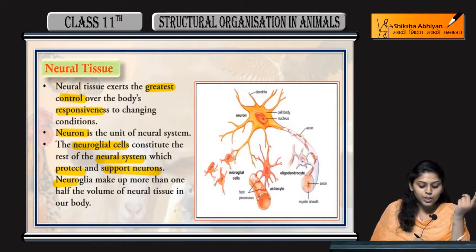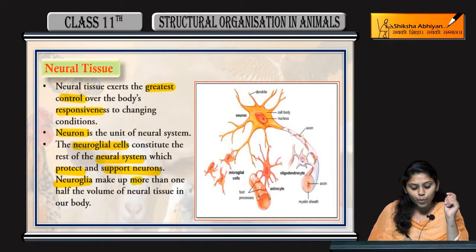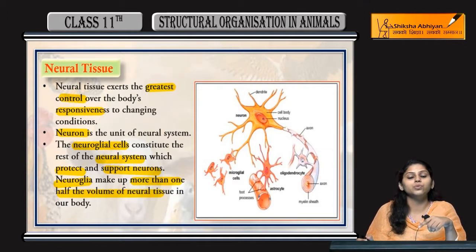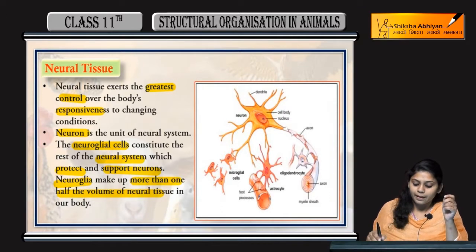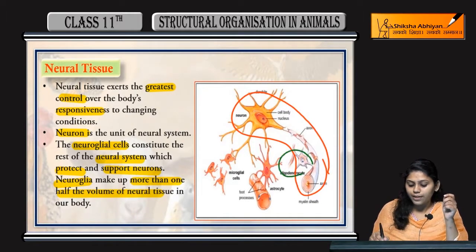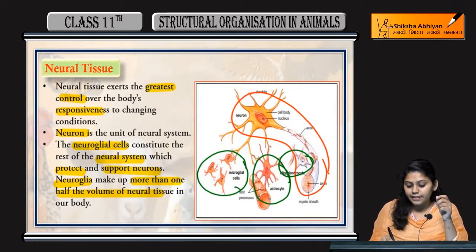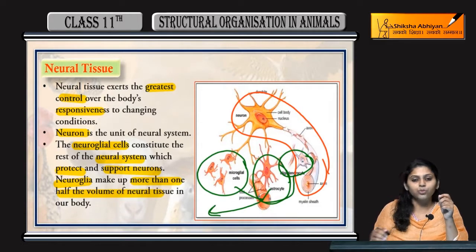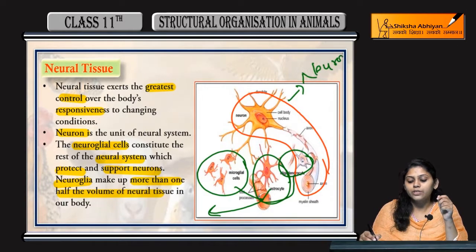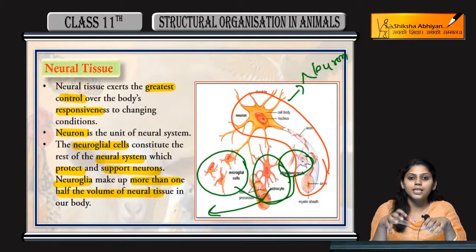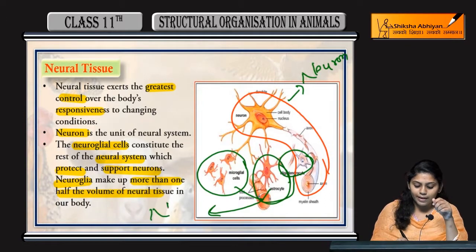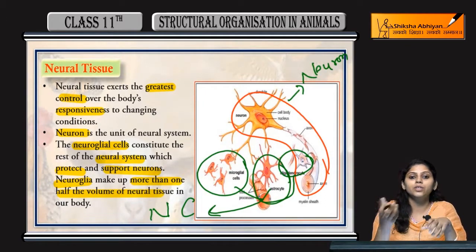Neuro glial cells hain. Neuron ke alawa oligodendrocytes, astrocytes, and micro glial cells hain — yeh teen neuro glial cells hain. This is neuron. Neuron kya hai? Structural and functional unit of nervous system. Aur neuro glial cells kya provide karti hain? Support provide karti hain neuron ko.